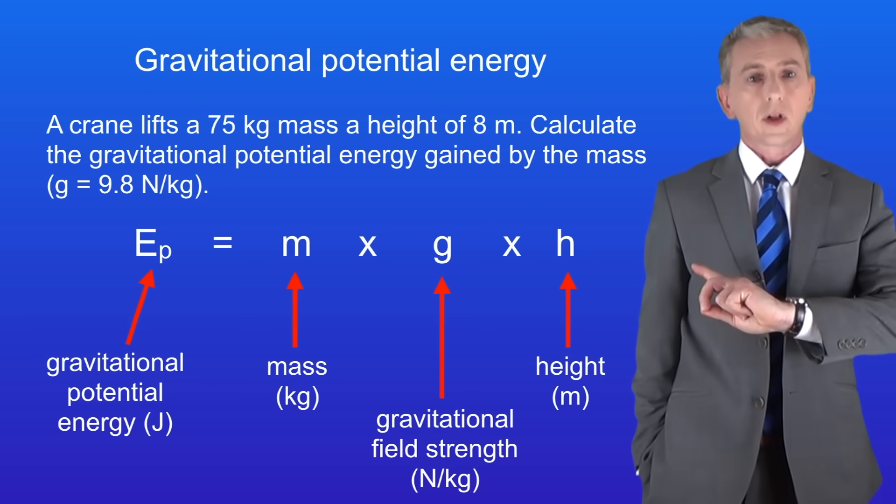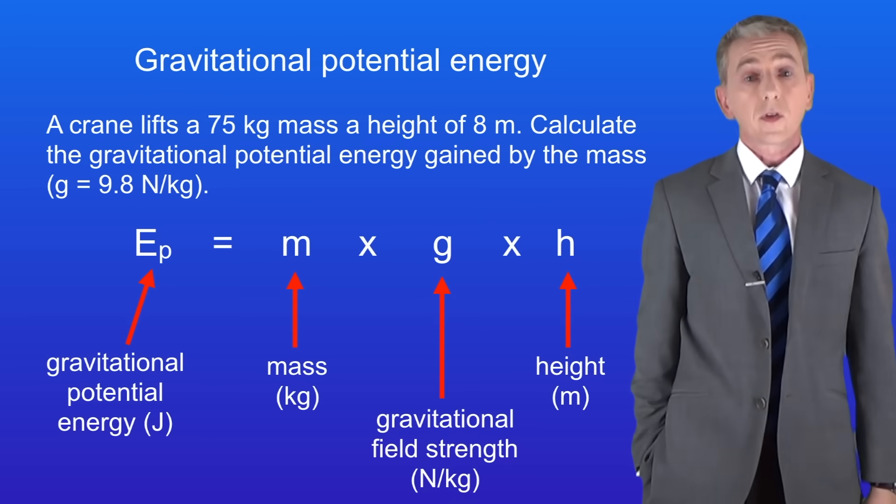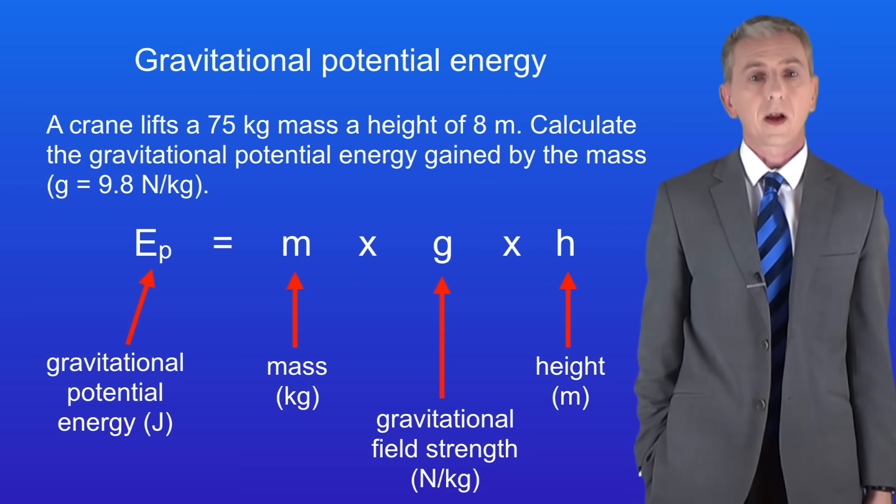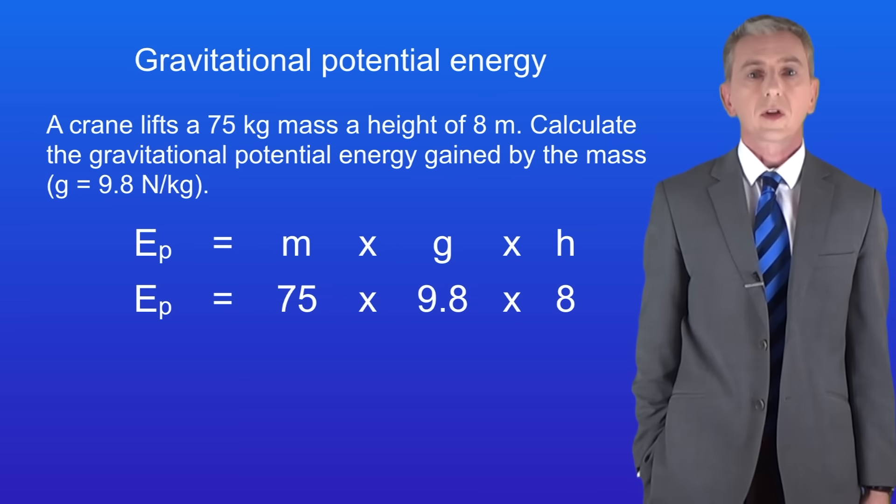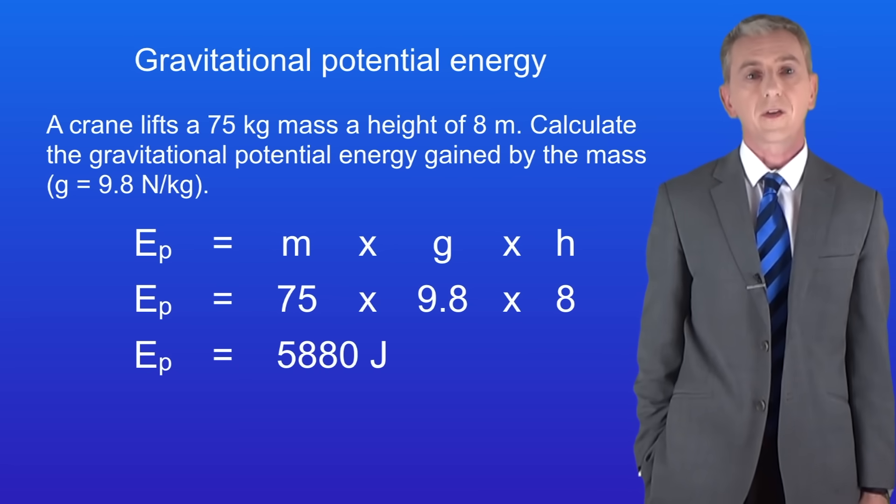Here's the equation that we're going to use. The mass of the object is 75 kilograms. The gravitational field strength is 9.8 newtons per kilogram and the height is 8 meters. Putting these numbers into the equation gives us a gravitational potential energy of 5880 joules.